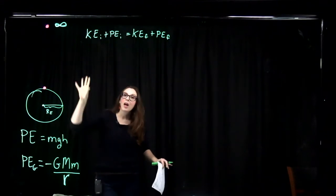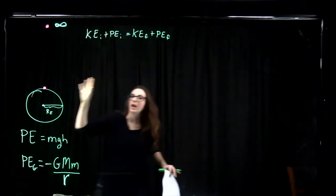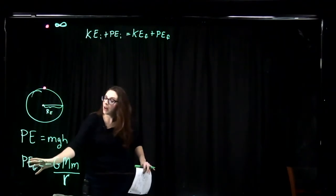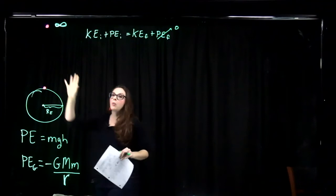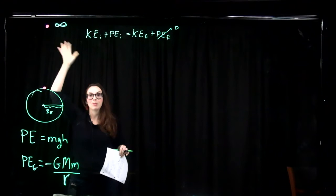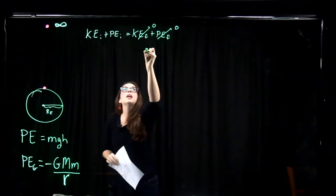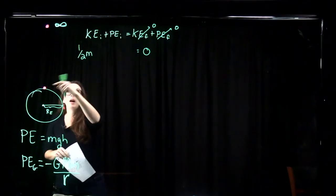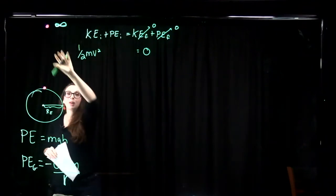Out here at infinity — our final state — we are so far from the Earth that the gravitational potential energy is zero. We also assume that way out at infinity our kinetic energy is zero, because the object's speed is zero once it reaches infinity. So we have: zero equals our initial kinetic energy, one-half m v squared, where v is the escape velocity needed to escape the Earth's gravitational pull.